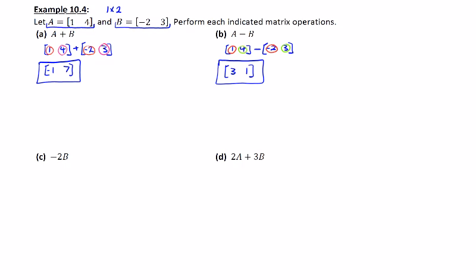Part C wants us to look at a scalar product. Negative 2 is going to multiply with matrix B. We can write that out. Negative 2 times the matrix B, which is represented with the entries negative 2, 3.